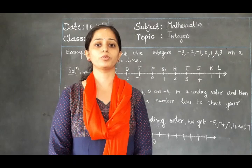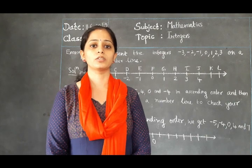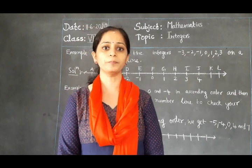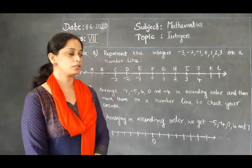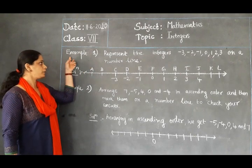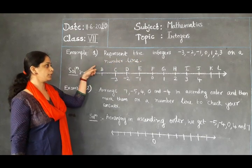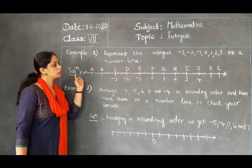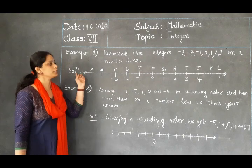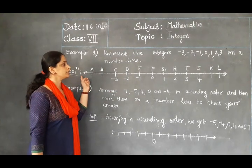Last class we learned about types of numbers — whole numbers, natural numbers, and integers. Today, we will learn more about integers. All of you know how to represent integers. I will take one example and show you. See Example 1: represent integers minus 3, minus 2, minus 1, 0, 1, 2, 3 on a number line. Draw a line — you know the difference between a line and a line segment. A line is never ending; a line segment has two end points. That line is the number line.